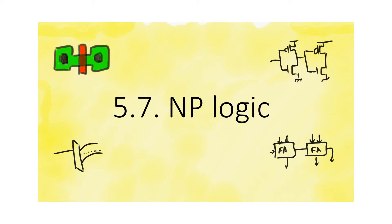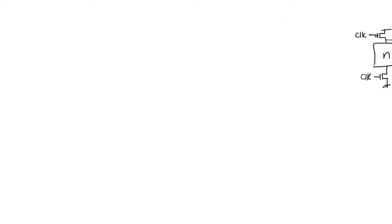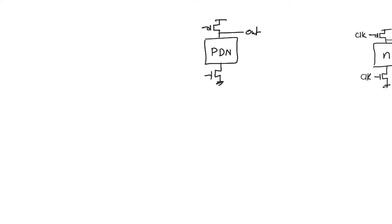We found that a naive attempt to cascade dynamic gates is not going to work. But there are easy solutions to this problem that make dynamic circuits practically useful. To find a solution for cascading, we have to consider the fact that dynamic gates so far have been formed by sandwiching a pull-down network between a clock PMOS and a clock NMOS, and taking the output at the drain of the clock PMOS.